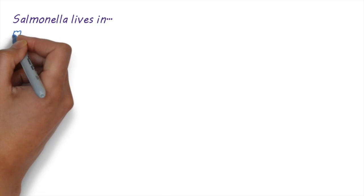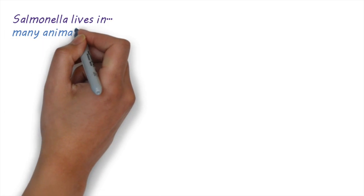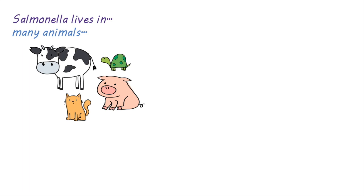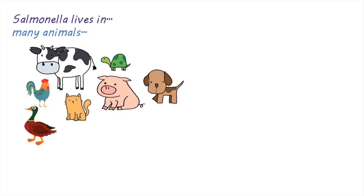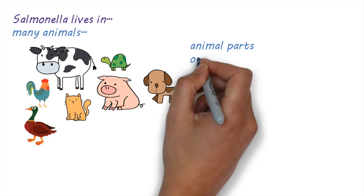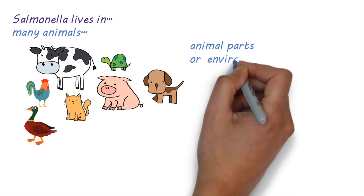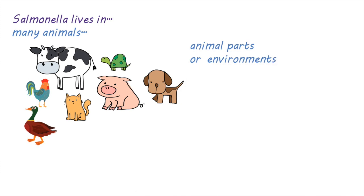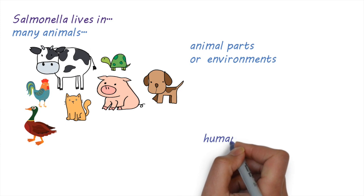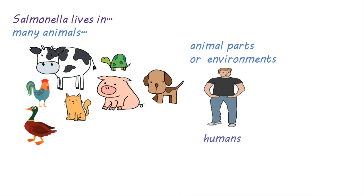Salmonella can live quite happily in the intestines of many animals like cows, turtles, pigs, cats and dogs, and in birds like chickens and ducks. Other parts of the animals like feathers or fur, or the places they live in, can also be contaminated by the bacteria. Some types of Salmonella, like Salmonella typhi, live only in humans.